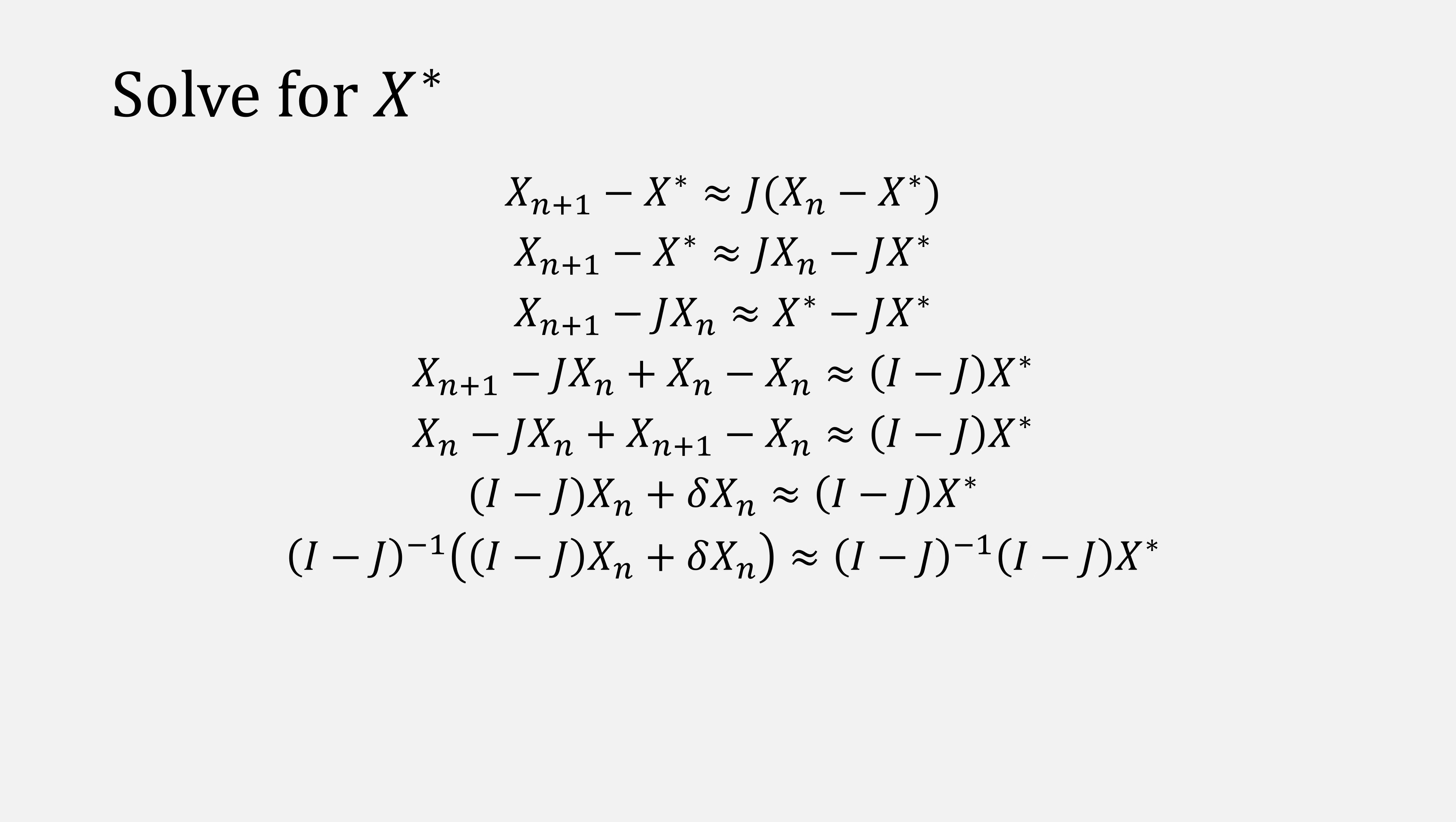Then, multiply both sides by the inverse of i minus j and distribute. We're left with this expression, meaning x star is approximately equal to x of n plus i minus j inverse times delta x of n.